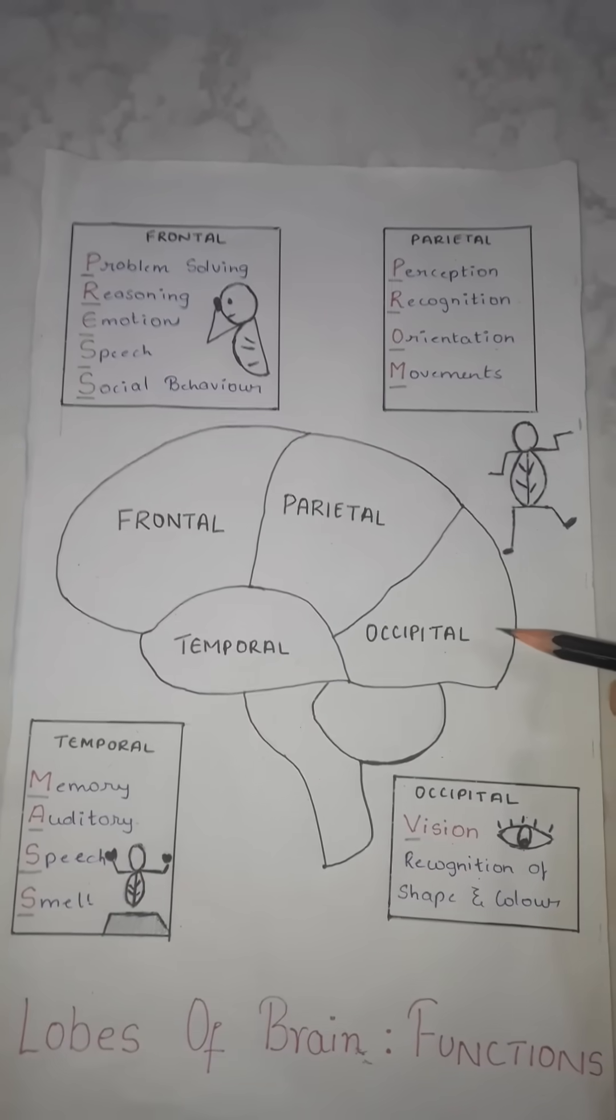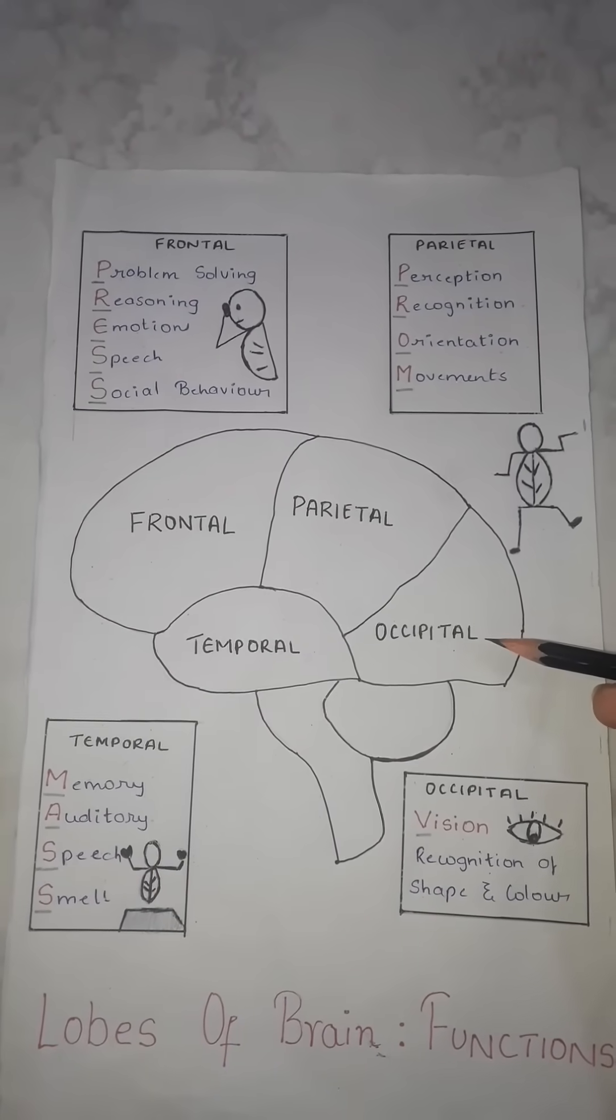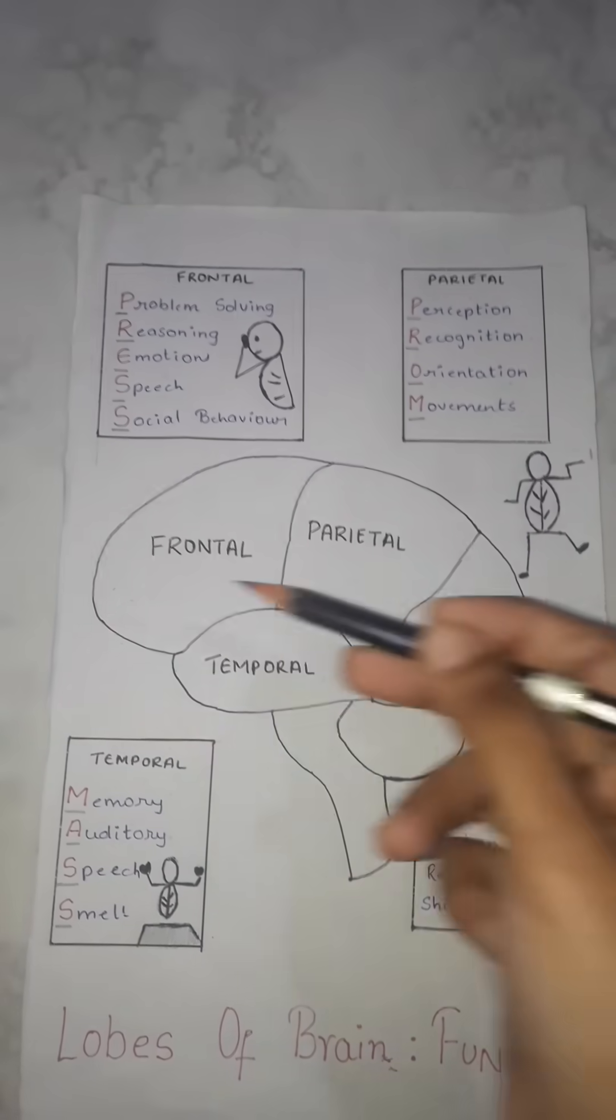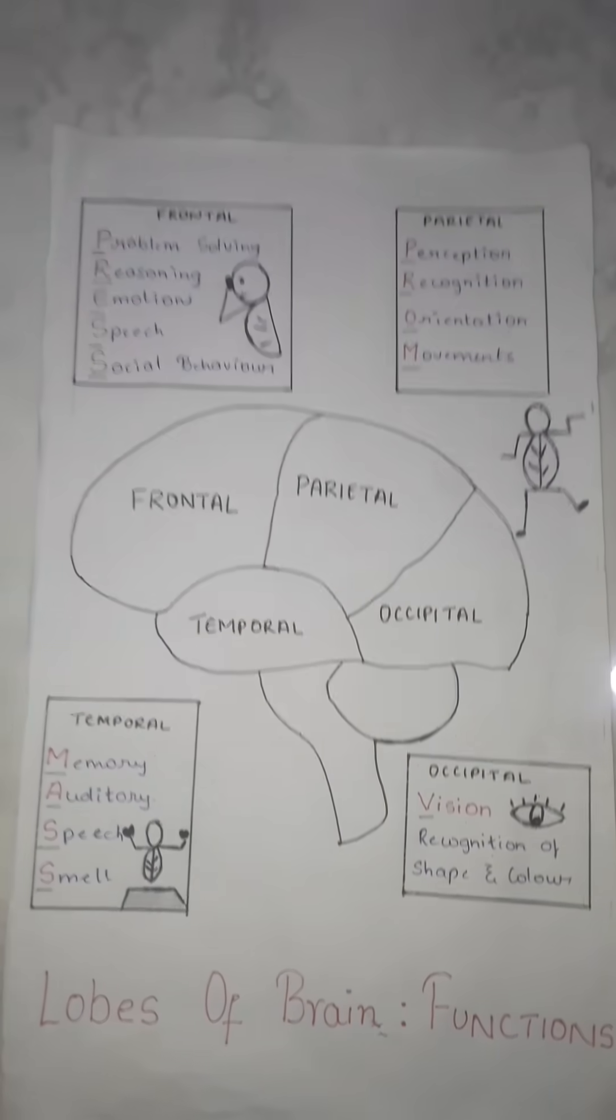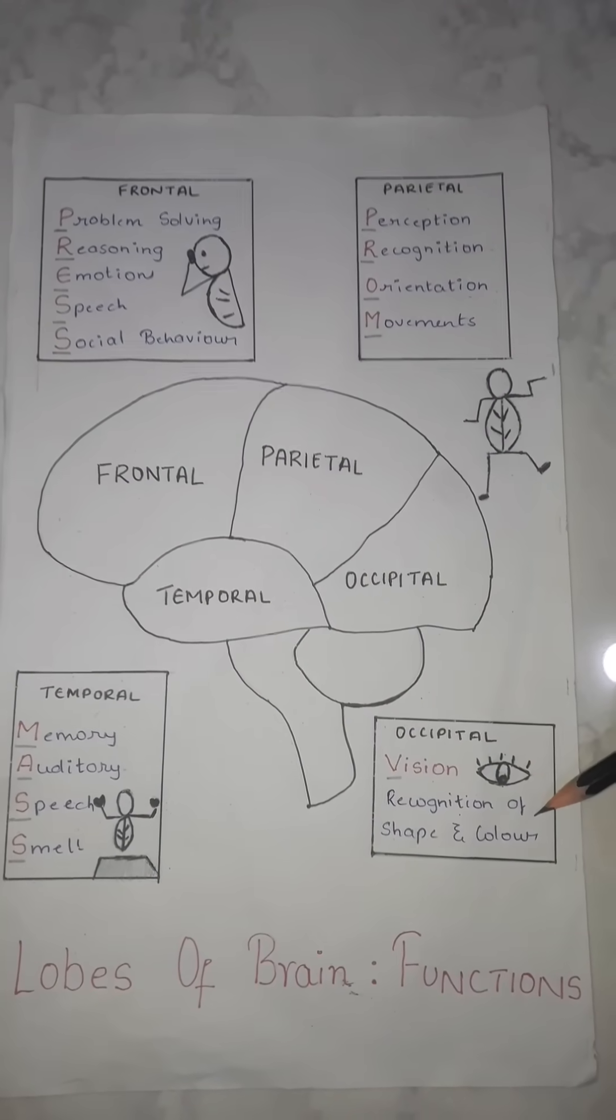And then finally, we have the occipital lobe. So for the occipital lobe, since it is present posteriorly, I want you to remember that just opposite to the occipital lobe, which is anteriorly, we have the eyes. So the occipital lobe is responsible for vision and also for recognition of shape and color.